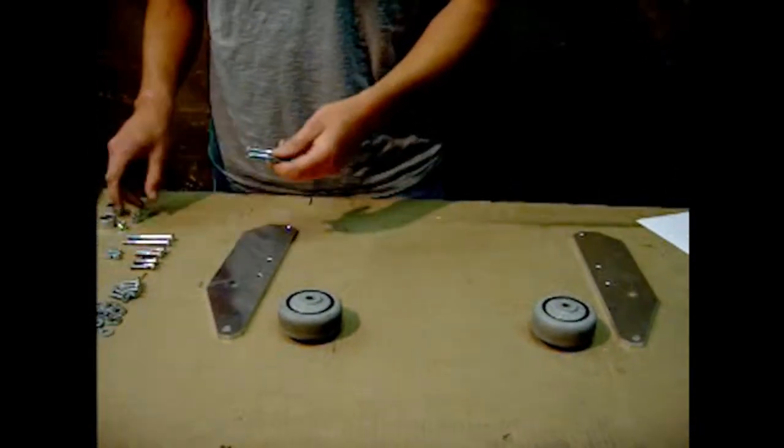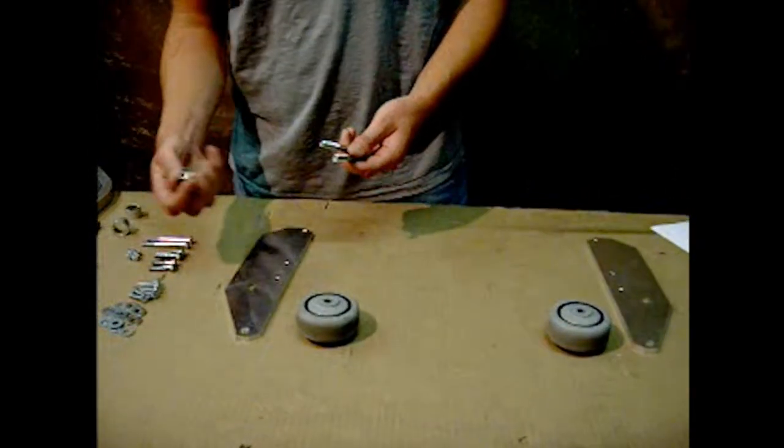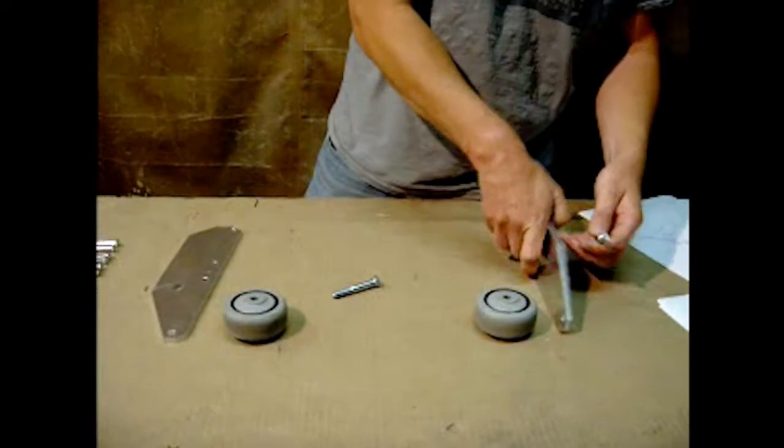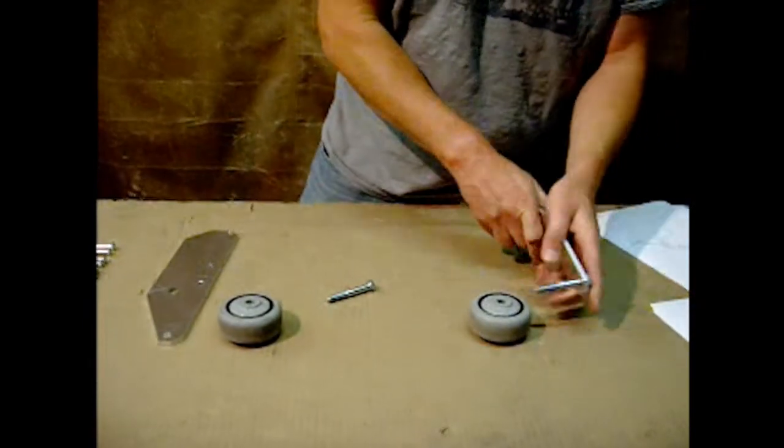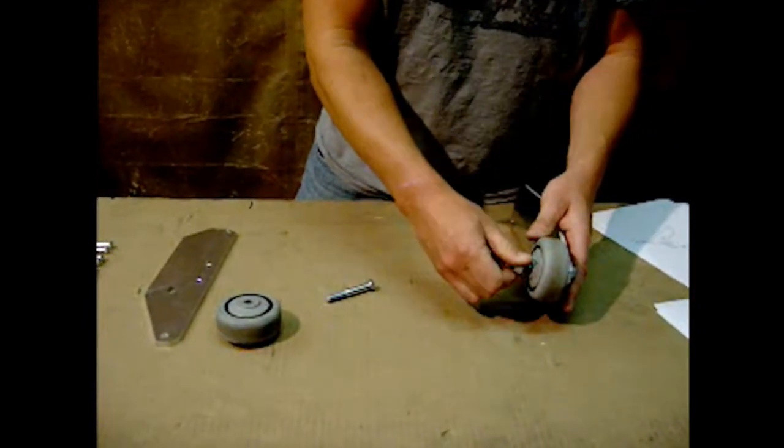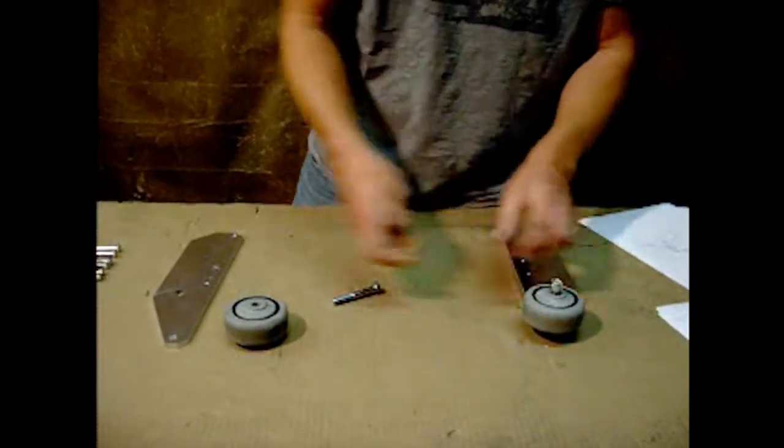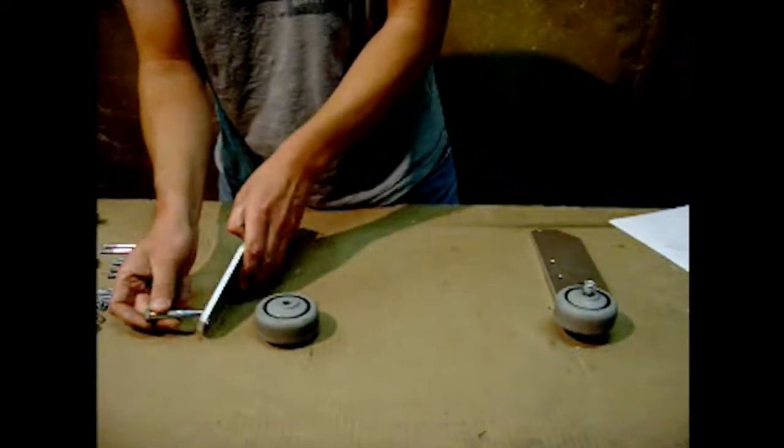You get the two 3-inch bolts that came with your sweeper and the nuts. And you simply put the bolt through the wheel plate, through the wheel, put the nut on, and repeat for the opposite side.